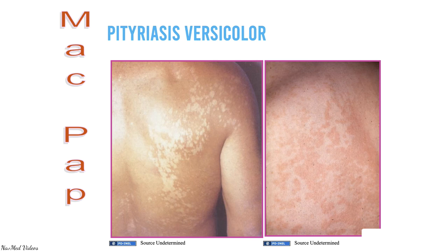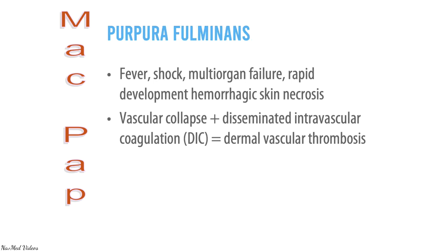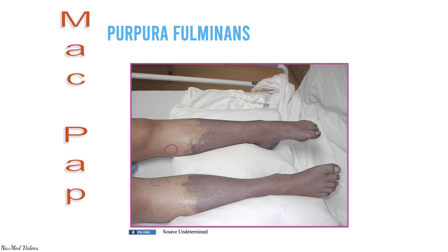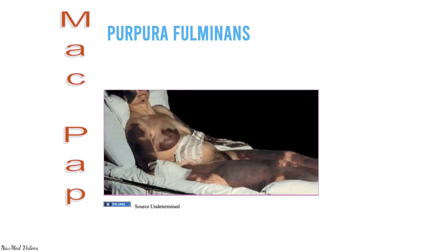Pityriasis rosea is an acute self-limiting eruption. A herald plaque on the trunk is a characteristic feature; a generalized secondary eruption occurs one to two weeks later in a Christmas tree pattern. Spontaneous remission occurs in six weeks without therapy. Purpura fulminans is a devastating condition presenting with fever, shock, multi-organ failure, rapid development of hemorrhagic skin necrosis, vascular collapse, and disseminated intravascular coagulation with dermal vascular thrombosis. It can be fatal if not treated promptly.